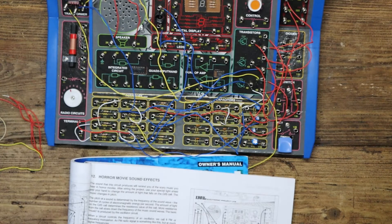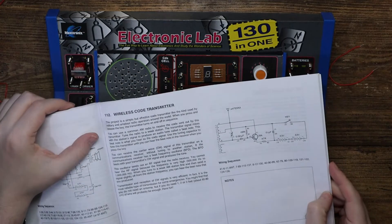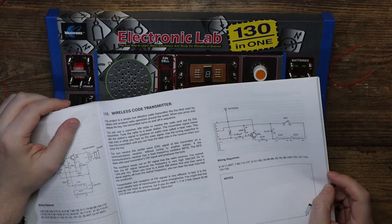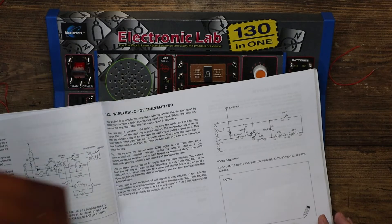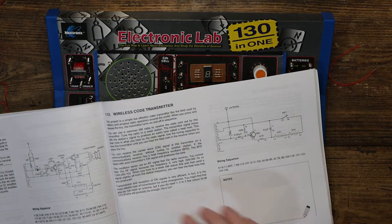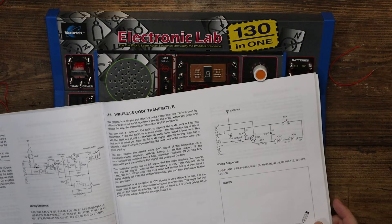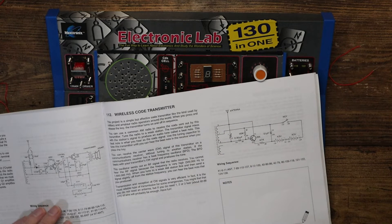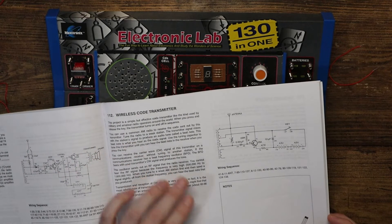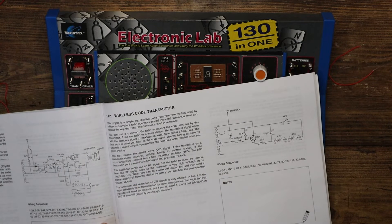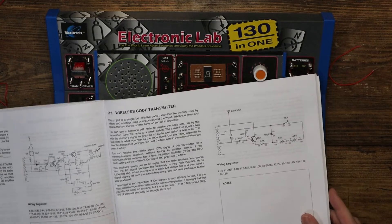Right. Let's try something else that's in here. This next one I'm going to try out here is the wireless code transmitter. This has got to be like Morse code. Surely I haven't tried it yet, but we'll give it a go. You need to have a radio on the go as well. So here's said radio tuned to an AM station. It says this project is simple, but effective code transmitter, like the kind used by military and amateur radio operators around the world. When you press and release the key, the transmitter turns on and off in sequence. You can use a common AM radio to receive the code sent out by its transmitter, tune the radio to a weak station. We'll get to how you actually do that last little bit in a second after I've wired it all up. We've got a fairly simple wiring sequence here. So let's get cracking.